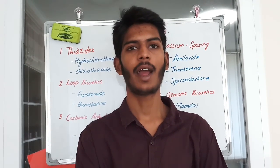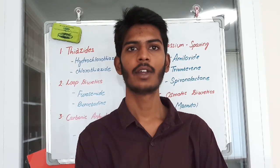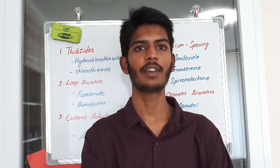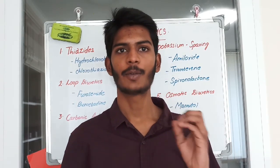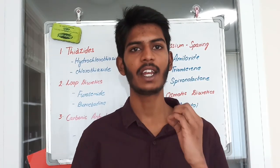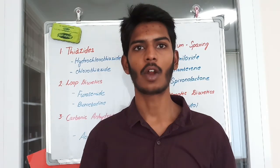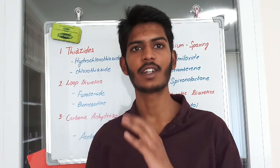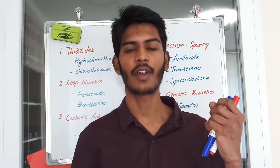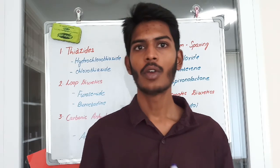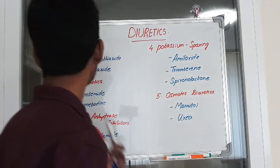Today I'd like to discuss the pharmacology of diuretics. What is a diuretic? A diuretic is a drug that, when it enters your body system, will increase your urine output. It acts on the nephron of our kidney. We have five groups of major diuretics: thiazide diuretics, loop diuretics, carbonic anhydrase inhibitors, potassium-sparing, and osmotic diuretics.